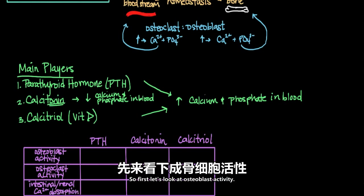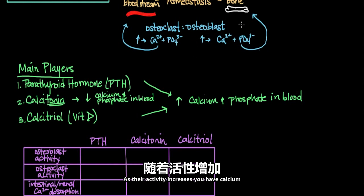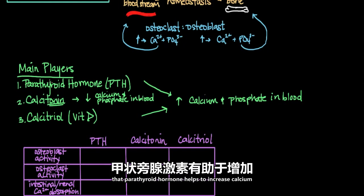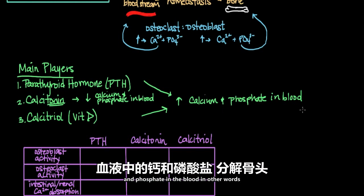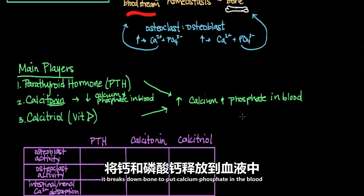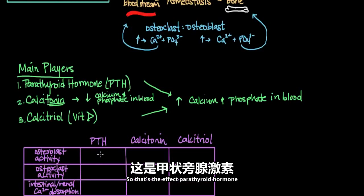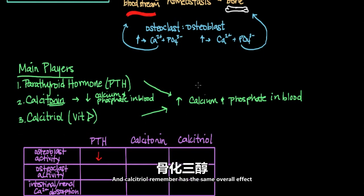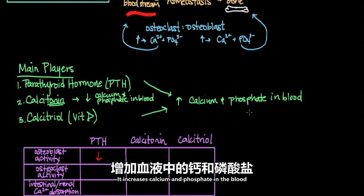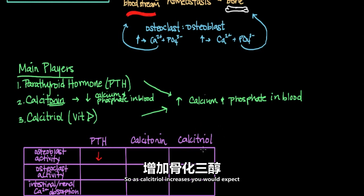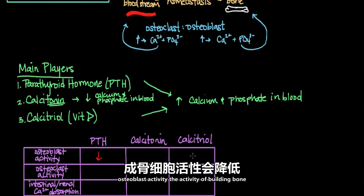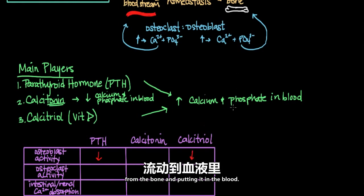Looking at osteoblast activity first: osteoblasts build up bone, so as their activity increases, calcium and phosphate are taken from the bloodstream and deposited into bone. Since parathyroid hormone increases calcium and phosphate in the blood by breaking down bone, we would expect osteoblast activity to decrease as PTH increases. Similarly, calcitriol has the same overall effect as PTH — it increases calcium and phosphate in the blood by taking it from bone — so calcitriol also decreases osteoblast activity.